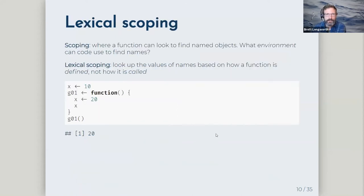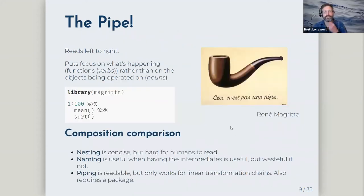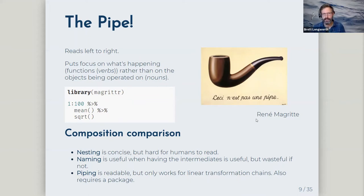The magrittr package is named after René Magritte, a French surrealist artist famous for the statement 'This is not a pipe.' Someone with humor took that as the name for the package.